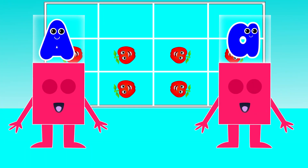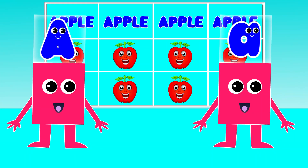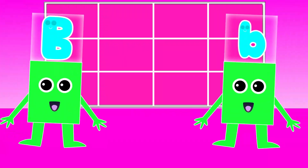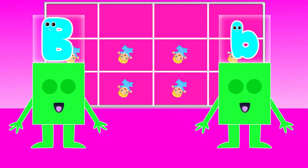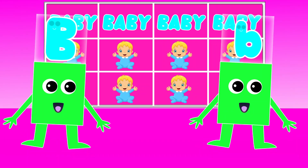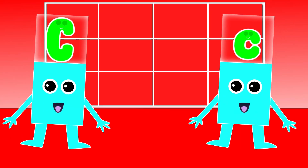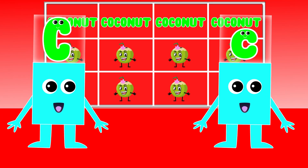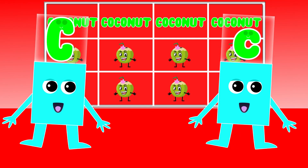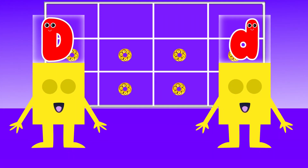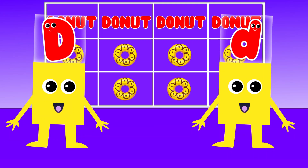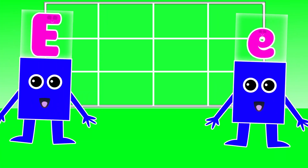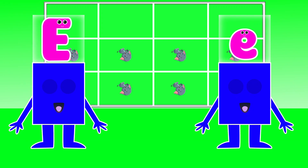A is for Apple. A, A. Apple. B is for Baby. B, B. Baby. C is for Coconut. C, C. Coconut. D is for Donut. D, D. Donut.